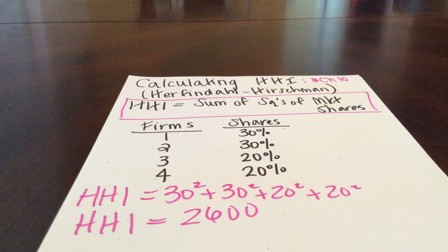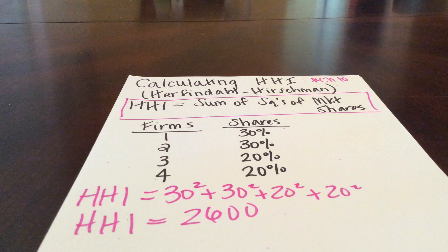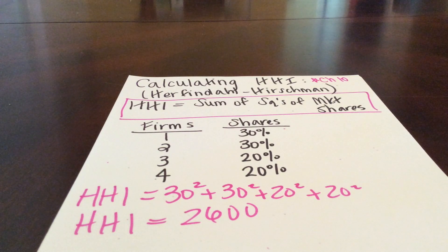We only have four firms in this market, so hopefully common sense would tell you this is not a very competitive market. But the HHI really takes into account the relative size of our firms and the distribution of firms in our market.